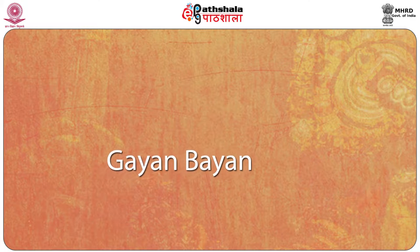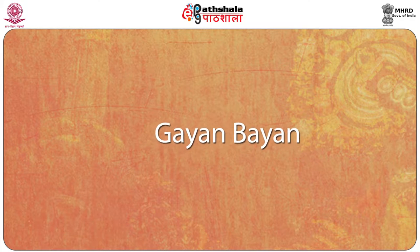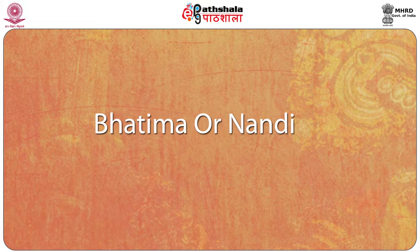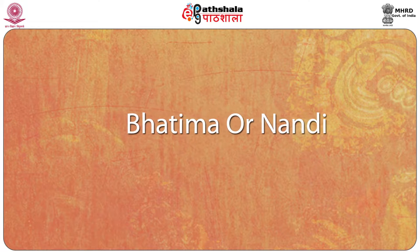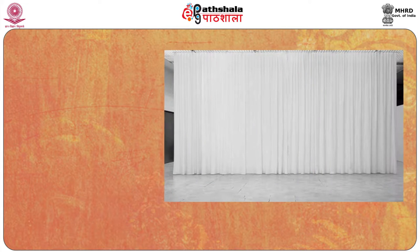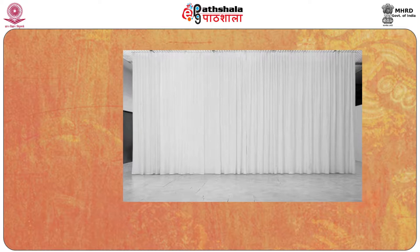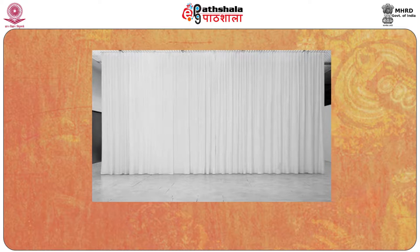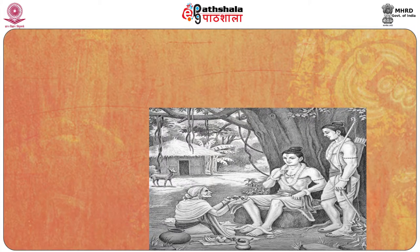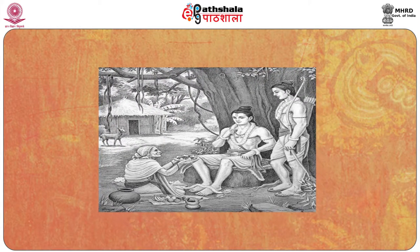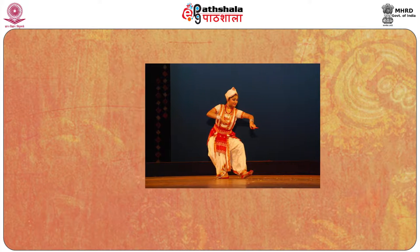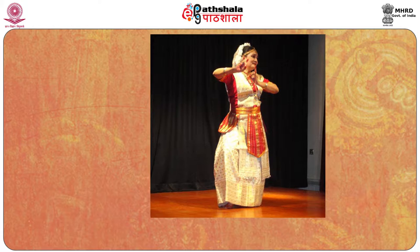The Ankya Nats opens with a Purvarang-type rendering of drumming and playing the cymbals in a segment called Gayan Bayan. Then enters the character of the Sutradhar as the main character in the play, irrespective of whoever be the hero, and it is he who opens the play with a benediction called Bhaktima or Nandi. All the main characters make their entry from behind a white cotton sheet called Aar Kapoor, just like the curtain called Yavanika described in the Natya Shastra. They enter from below a nine-lamp arc, representative of the concept of Navdha Bhakti, while singing and dancing in a manner that establishes the character. Dance is a critical part of the Ankya Bhavanas, and there were the Sutradhar dance, the Praveshar Nach, Yudhar Nach, Gita Nach, along with several other types of dances.